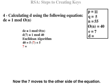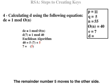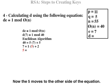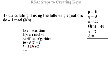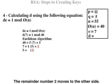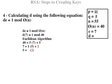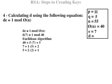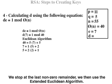Now the 7 moves to the other side of the equation. The remainder number 5 moves to the other side. How many times does 5 go into 7? 1 remainder 2. Now the 5 moves to the other side of the equation. The remainder number 2 moves to the other side. How many times does 2 go into 5? 2 remainder 1. We stop at the last non-zero remainder.